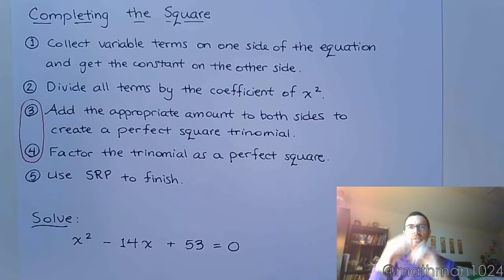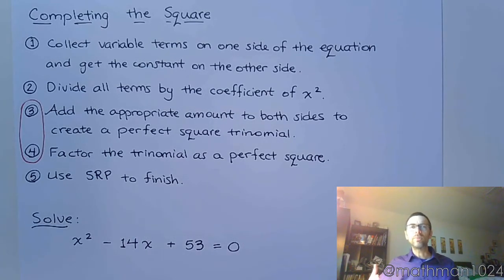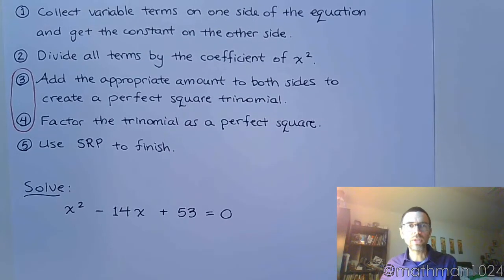And once you have that square set up, that parentheses with a square on it, you can then use the square root property to finish. And that's what completing the square is all about. It's about manipulating the equation so that you can use the square root property. So let's take a look at this example.